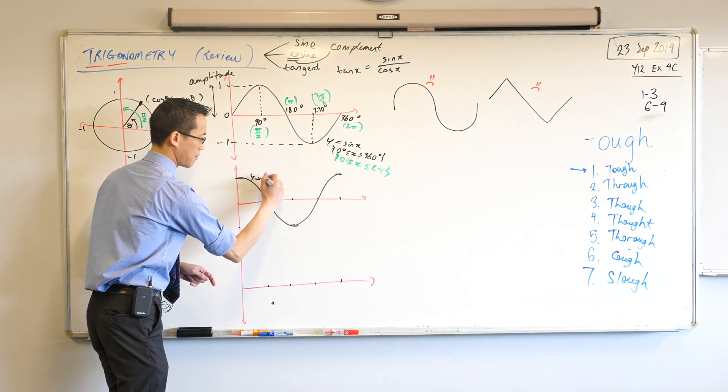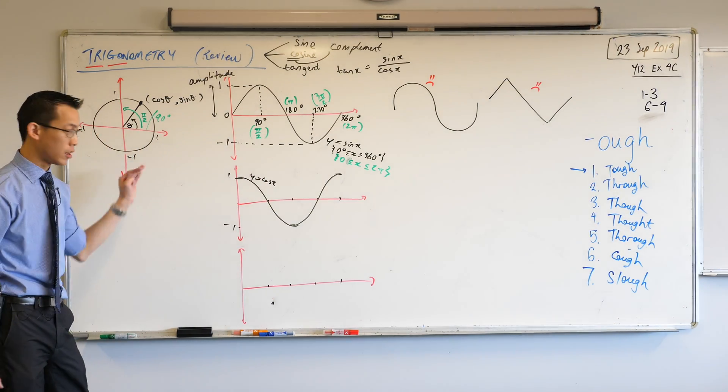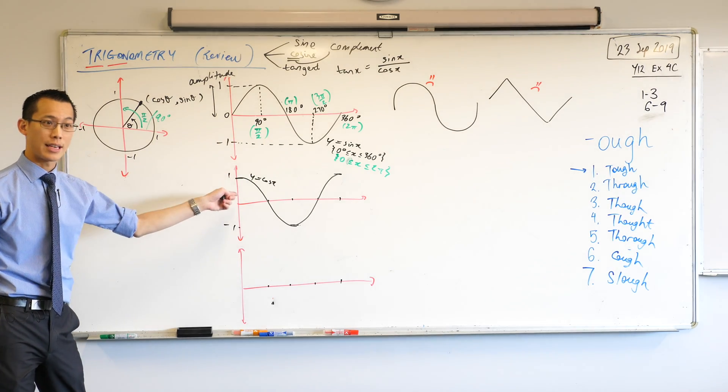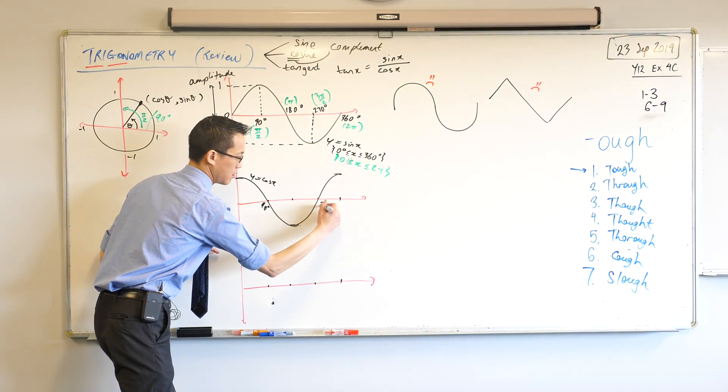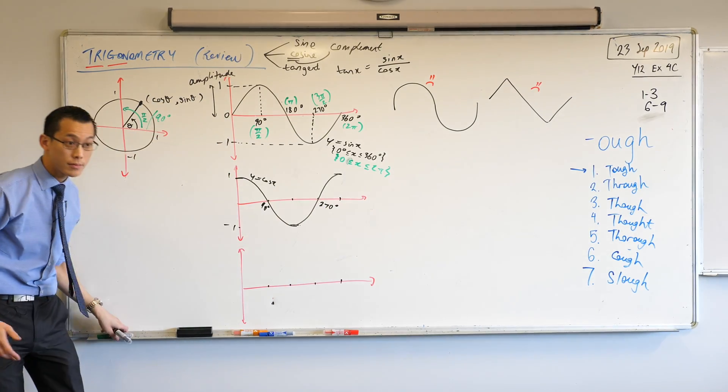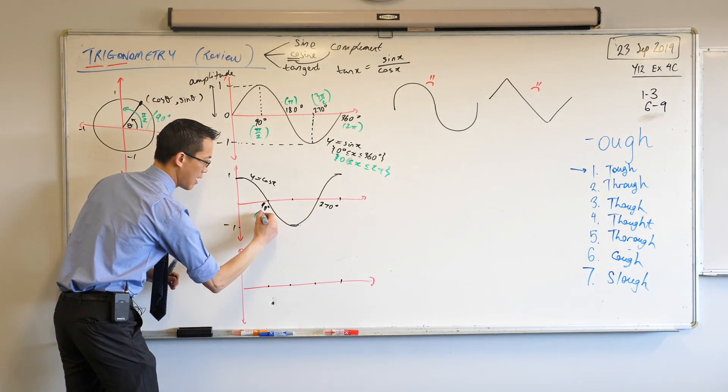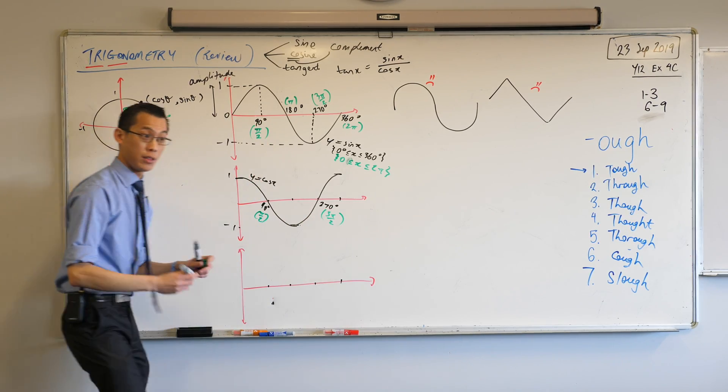Here's cos x. Here's one, here's negative one. At what point along the graph does the cos x hit zero? 90 and 270. Can you tell me them in radians as well? π/2 and 3π/2. I'm going to keep pushing on you because you've got to get more used to doing this in radians.